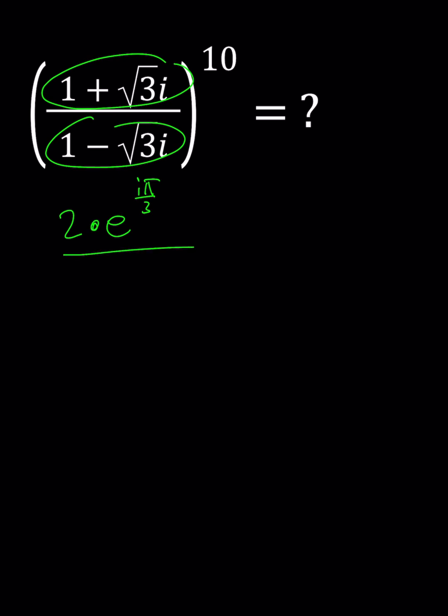The denominator is the same modulus but its argument is different. We're going to write it as negative pi over 3, and we're going to divide these two numbers and then raise the result to the 10th power.